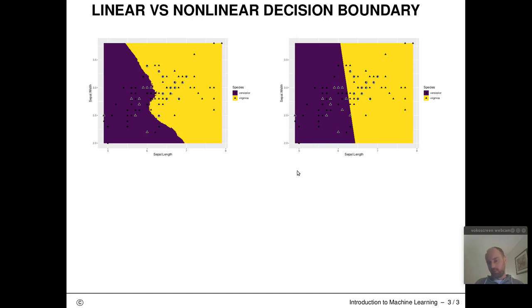Visually, this would look like this. We have seen this before. These would be linear decision boundaries separating two classes.